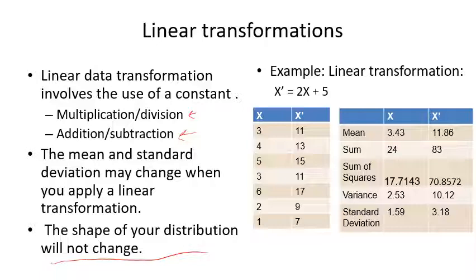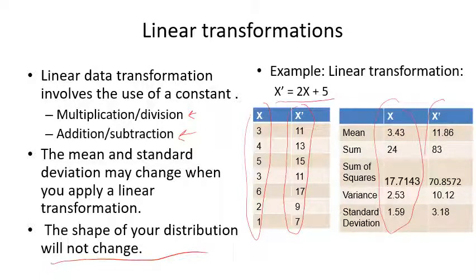Over on the right you see an example of a linear transformation where our x-prime scores are equal to 2x plus 5. So we're doing both multiplication and addition — you multiply each score by 2 then add 5. The descriptive statistics on the left are for the unaltered scores, and on the right for the altered scores. The mean changed, the variance changed, the standard deviation changed, but the shape of the distribution didn't change.